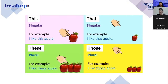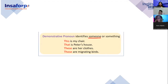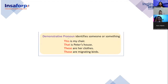The definition: demonstrative pronouns identify someone or something. Look at the structure — 'this' uses the verb 'to be.' For example: 'This is my chair.' 'That is Peter's house.' 'These are her clothes.' 'Those are migrating birds' — migrating, meaning moving from place to place. Those are the examples we are going to have in this class. As we already know, we are going to practice by talking about prices.